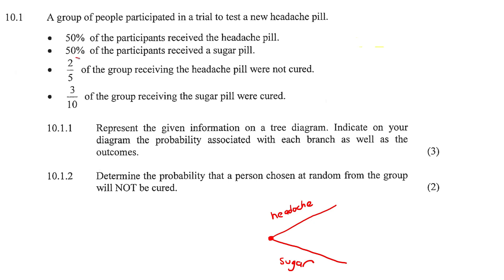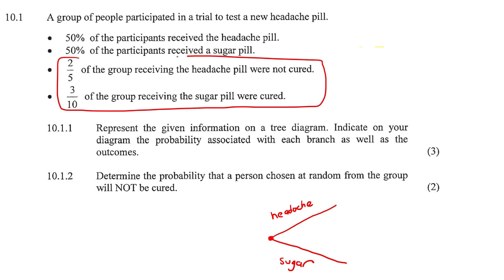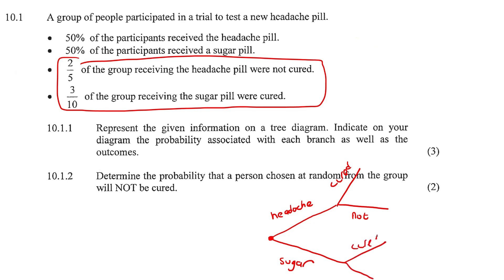The next category is cured and not cured. So we're going to put two lines from each one. This will be cured and this will be not cured — and then this will be cured and this will be not.